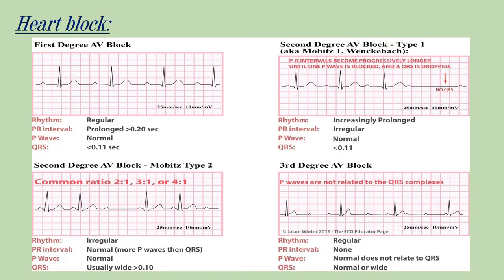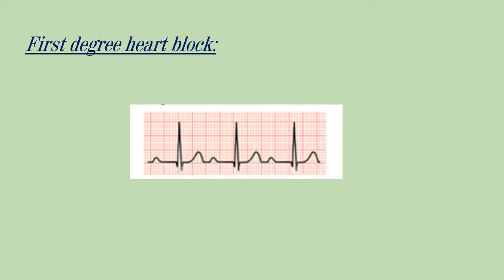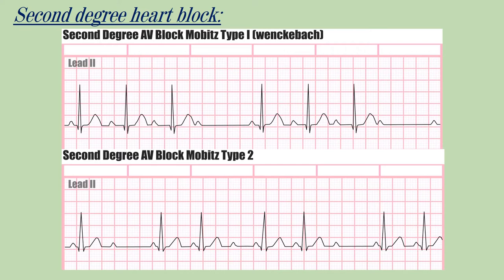Heart block — there are three degrees: first degree, second degree, and third degree. In first degree heart block, there is a delay in the way the impulse travels from the atria to the ventricles, but eventually each impulse reaches the ventricles. There is a normal P wave but a prolonged PR interval followed by a normal QRS complex. So in first degree heart block, there is only a prolonged PR interval.